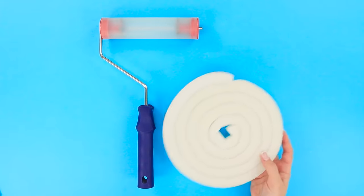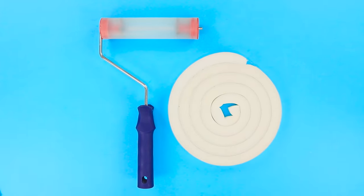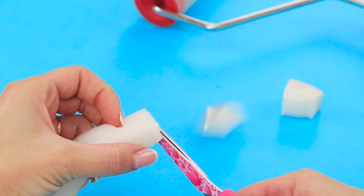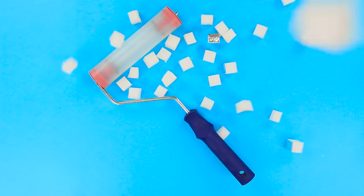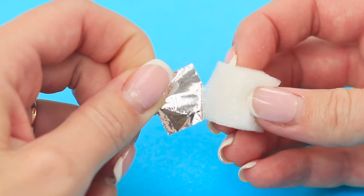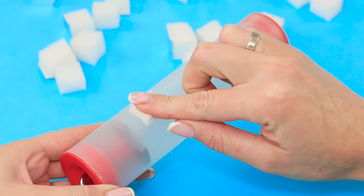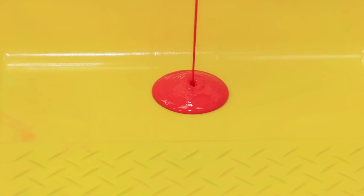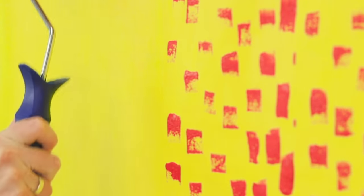For this idea, take a roller and foam rubber tape on a sticker base. Cut the tape into small squares and attach them to the roll randomly. Pour some red paint into the tray, dip the roller into it, and roll it over the wall. Wow! Look at these spots!